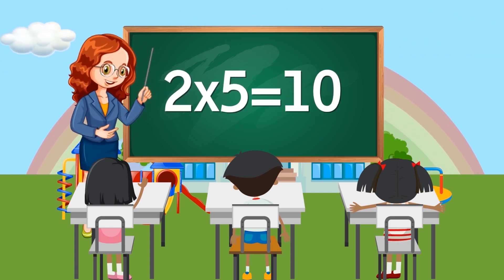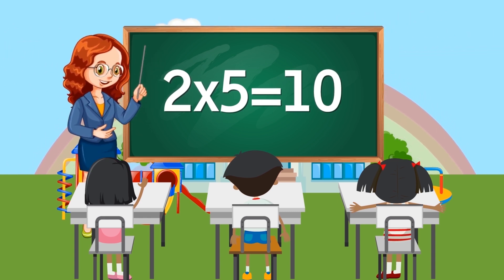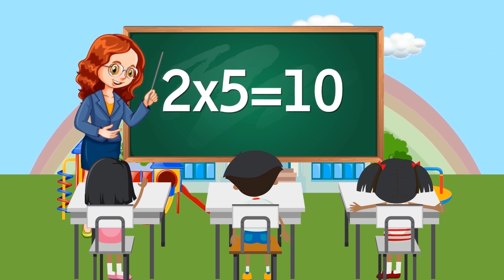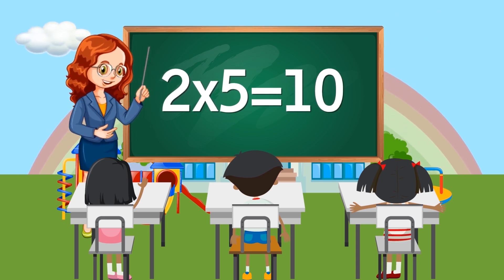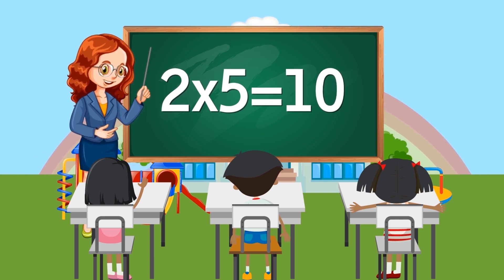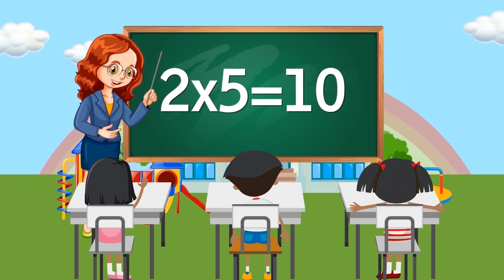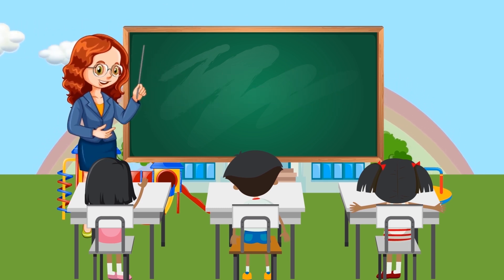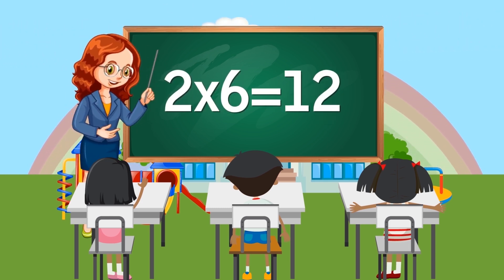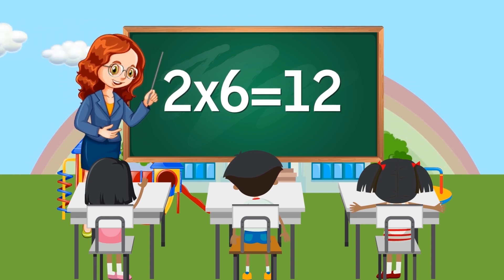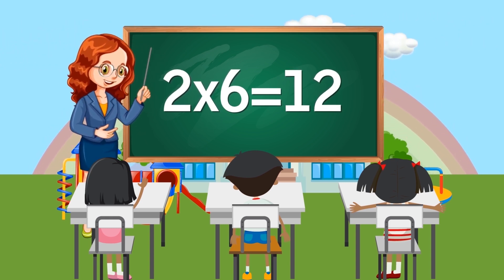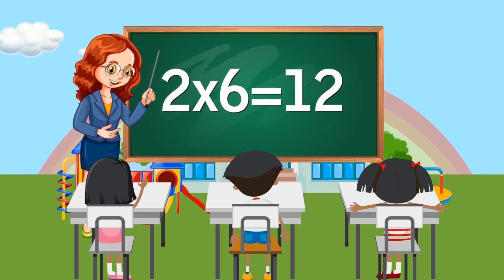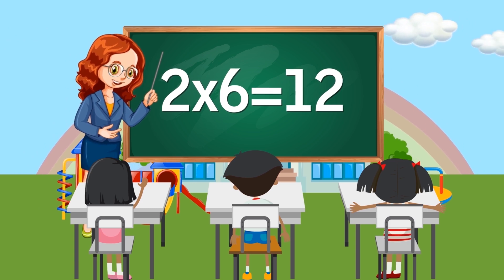Two times five equals ten. Two times six equals twelve.